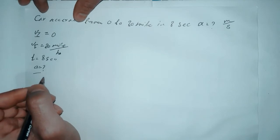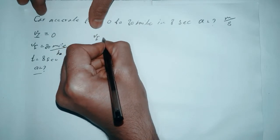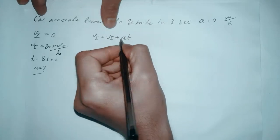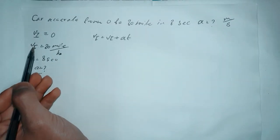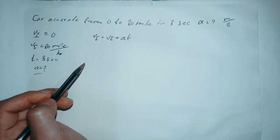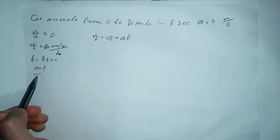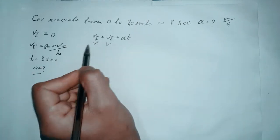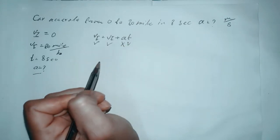So we have the formula. The formula is: final velocity equals initial velocity plus acceleration times time. This formula is especially for finding the final velocity. If the final velocity is missing, we find it from this formula. But here we have to find the acceleration, so we need to rearrange it. We have the final velocity, the initial velocity, and the time — acceleration is missing.